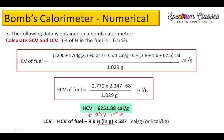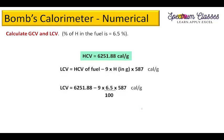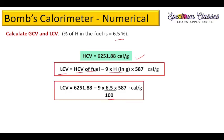Practice your numerical problems using the formula — only then will you understand the difference. Here LCV = HCV − 9 × (6.5/100) × latent heat. On solving, we get the LCV value in calories per gram.